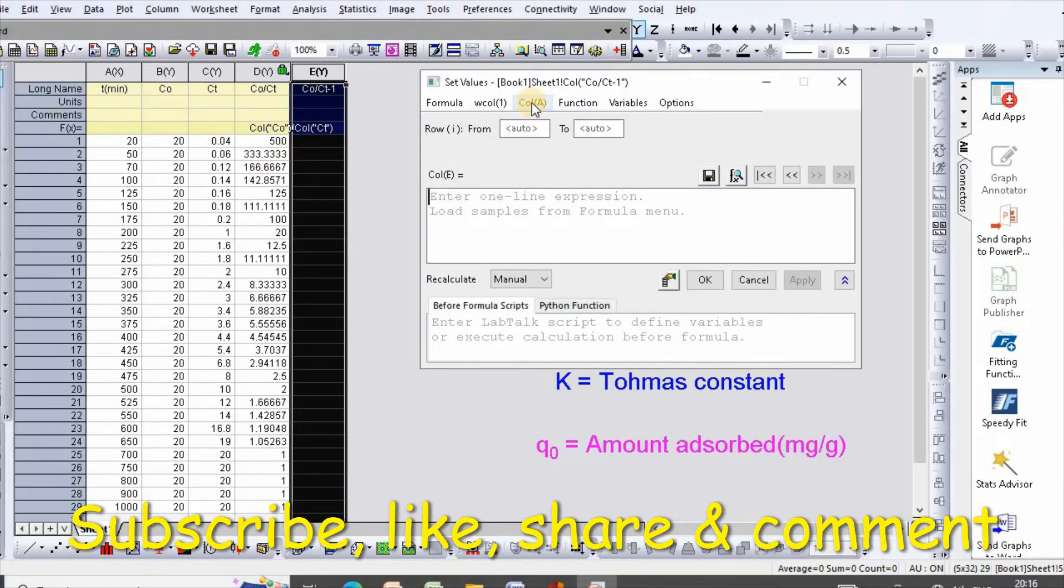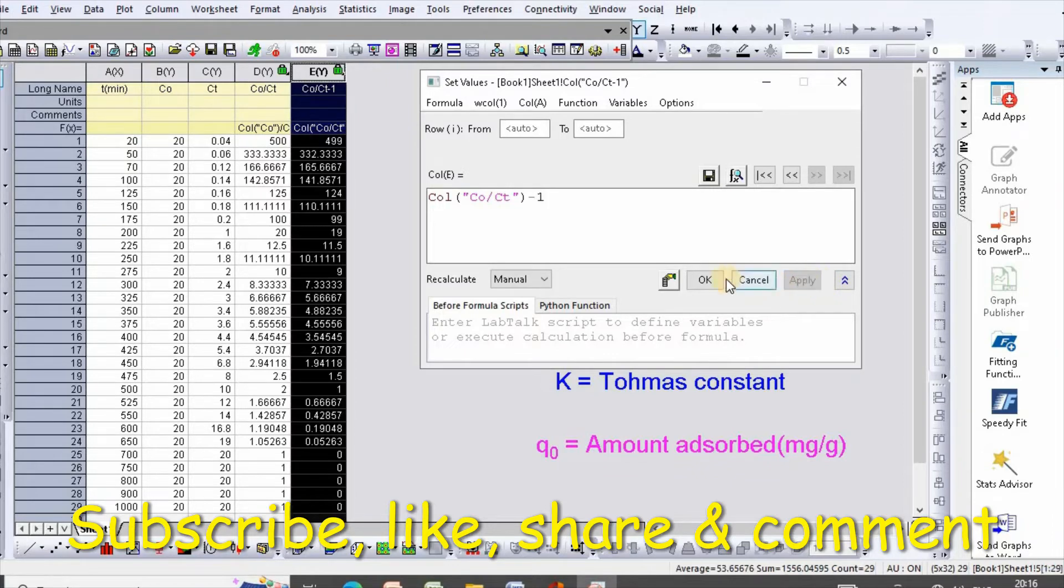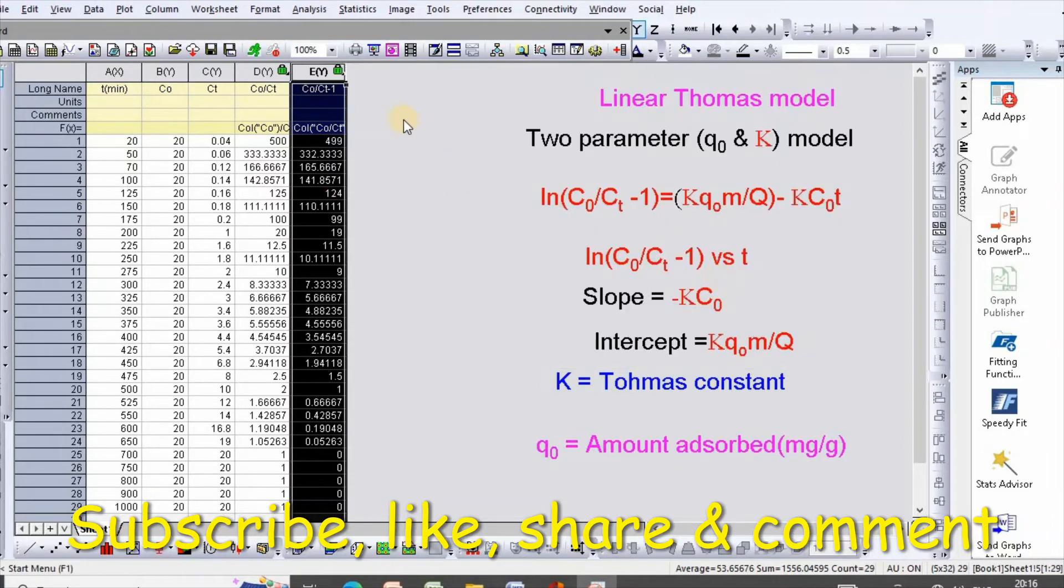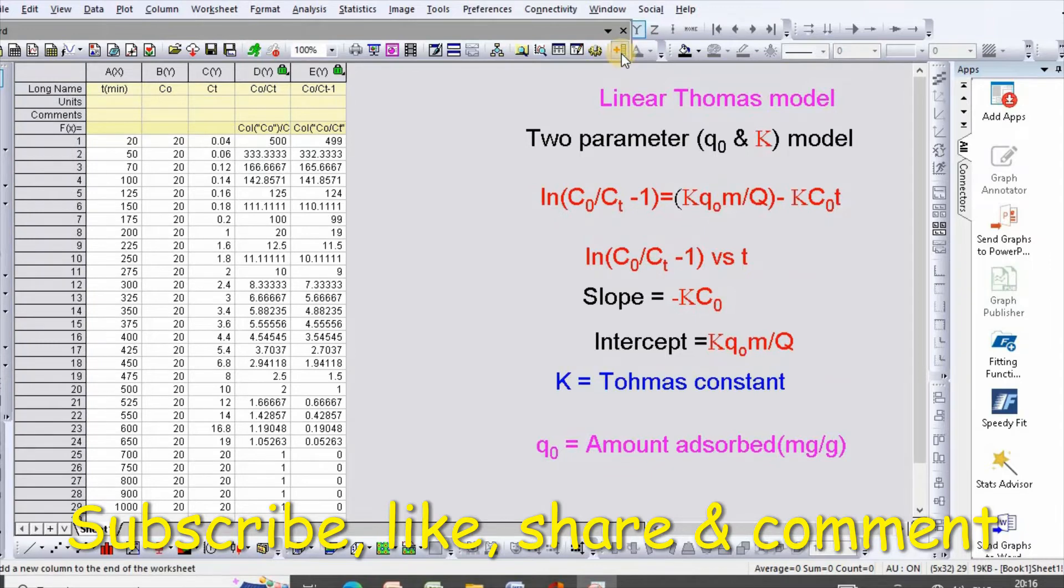Column t minus 1, apply, then update, then insert a column. Then you need to take ln(C0/Ct - 1).